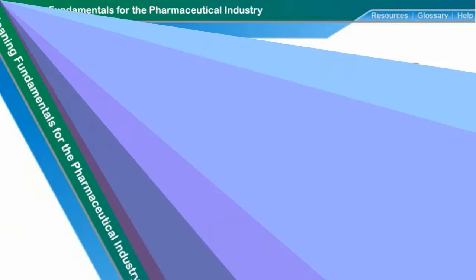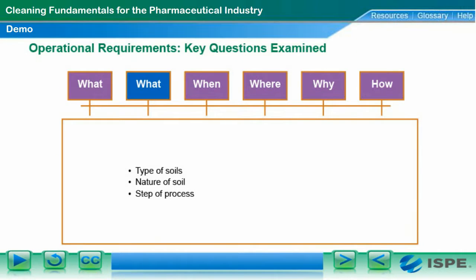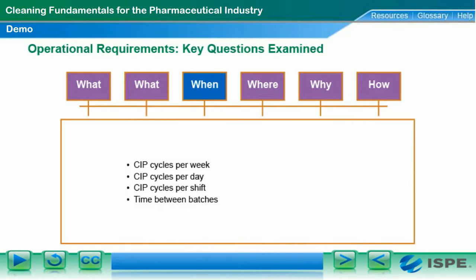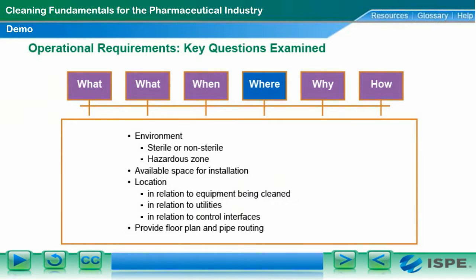In this section we will examine the operational requirements for a CIP system. The requirements are identified through a series of key questions.